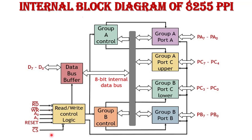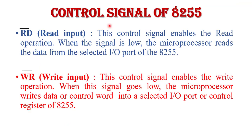Now let's explain all the control signals of 8255 in detail. The first control signal is RD bar — the read input signal. It is an active low signal, meaning it is active when logic zero. This signal enables the read operation; when low, the microprocessor reads data from the selected I/O port of 8255. The next is WR bar — the write input signal, also active low. When this signal goes low, the microprocessor writes data or a control word into a selected I/O port or control register of 8255.